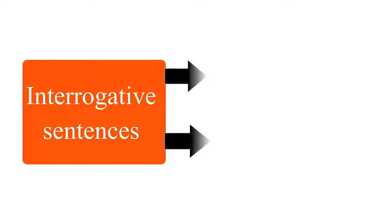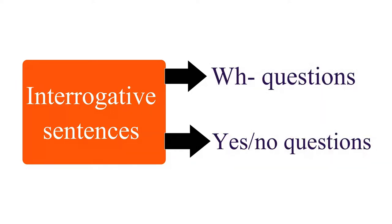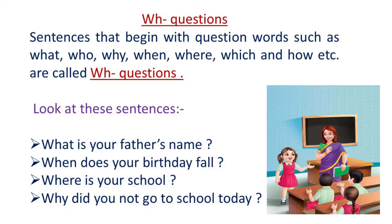Interrogative sentences are of two types. First is WH questions and second is yes or no questions. As the name indicates, WH questions begin with question words such as: what, who, why, when, where, which, how, etc.